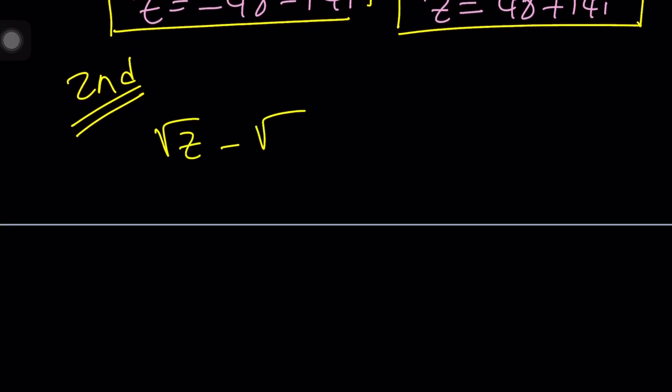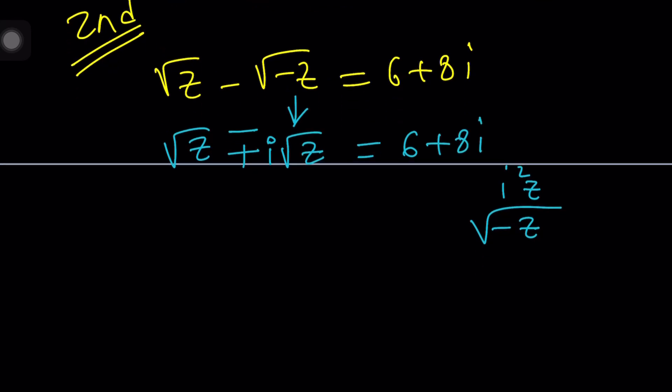So again, we have square root of z minus the square root of negative z equals 6 plus 8i. Second method is going to use something different. Instead of squaring both sides and dealing with negative z squared, I want to write this directly using i. And I can do that by using i outside the radical and multiplying it by the square root of z. The reason is simple, because if you square i times square root of z, you get i squared z, which is negative z. And again, if you square root it, you get back to the original. But there are two square roots you should always remember, and only one of them is considered the principal square root. But in this case it doesn't matter. So we can just write this as follows. There are two ways to handle it. This could be a plus minus, right? So let's go ahead and consider both cases. But let's start with the minus sign this time.